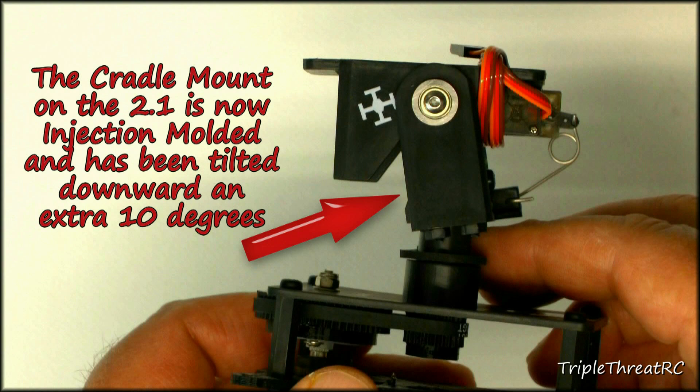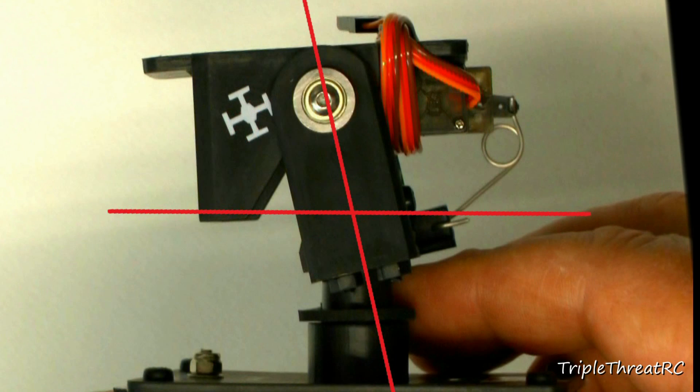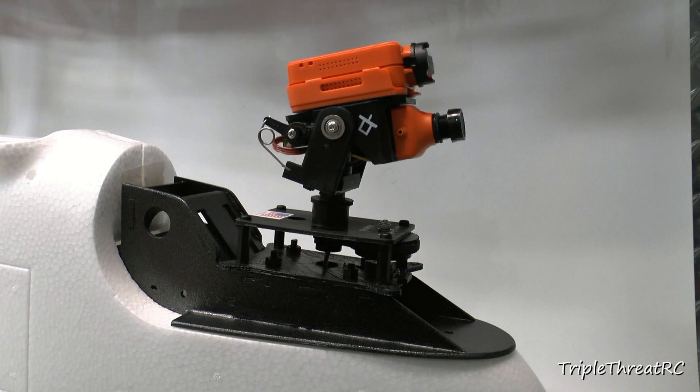The cradle mount you can see here is one of the parts that is now being injection molded for more precision. They took the opportunity to design in an increase of an additional 10 degrees down tilt, so it just makes it a lot easier for the camera to look downward.